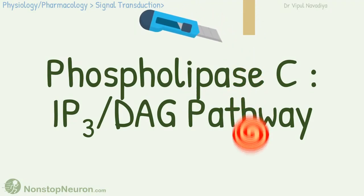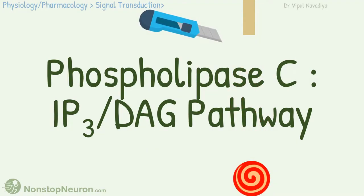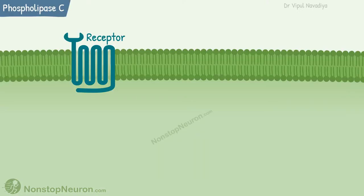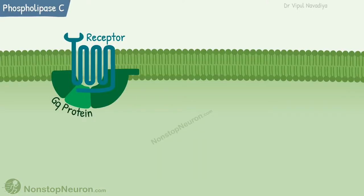In this video we will see the Phospholipase C IP3/DAG pathway of intracellular signaling. This pathway is seen downstream of GQ protein. The initial events in this pathway are similar to other G proteins that we have seen in the video on G protein coupled receptors.